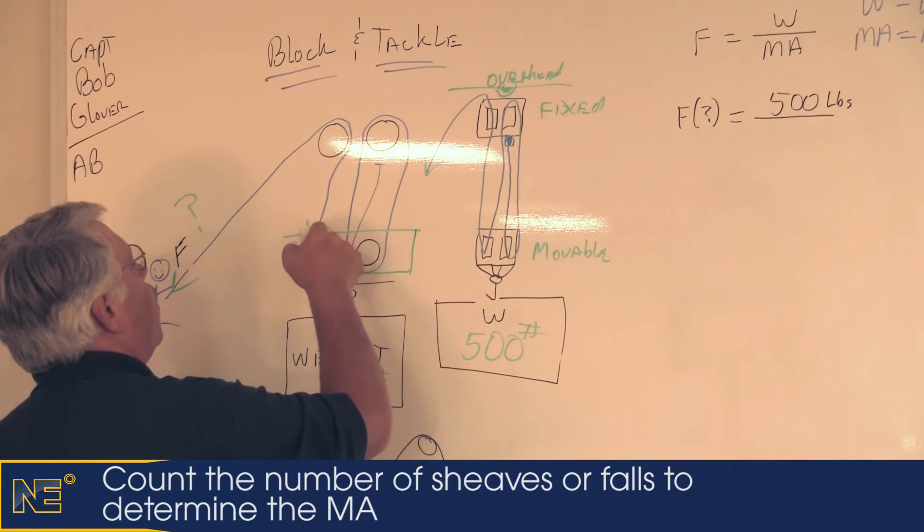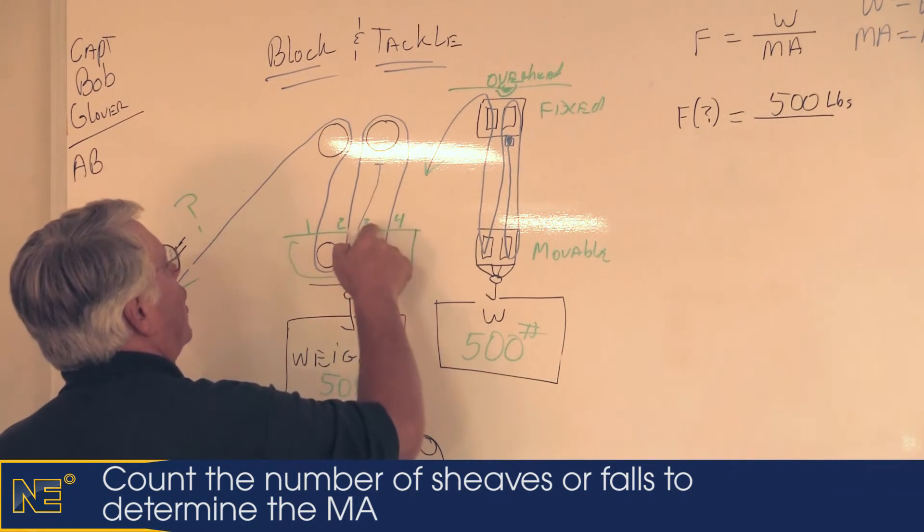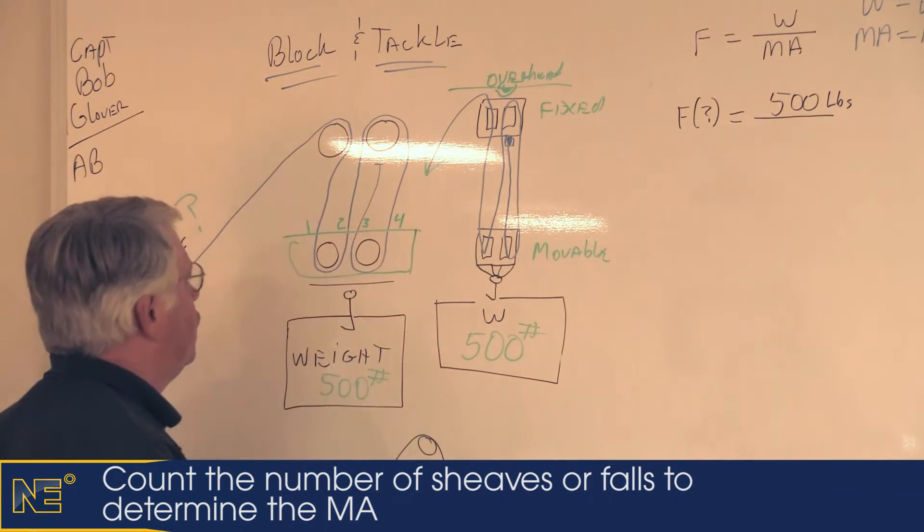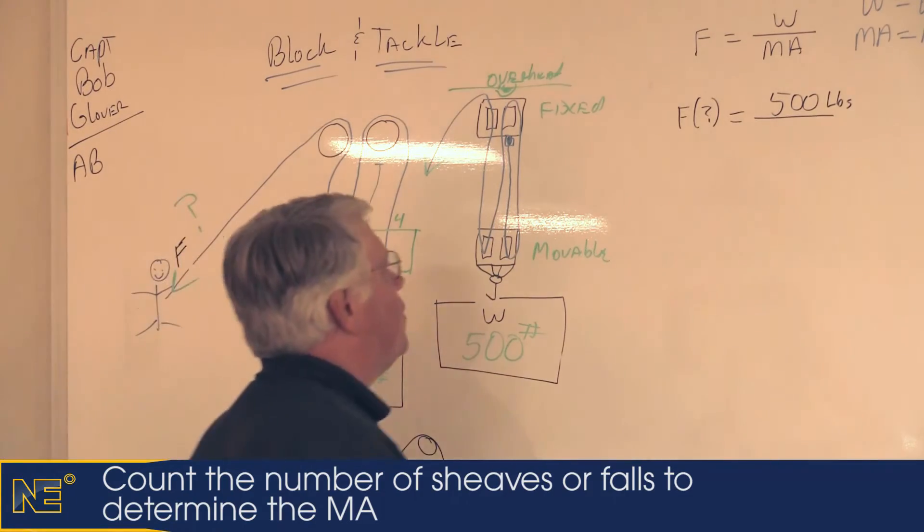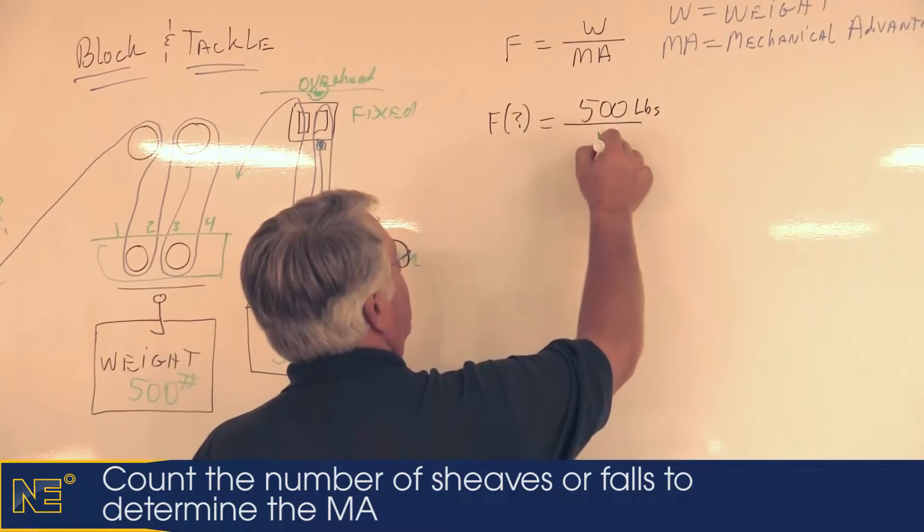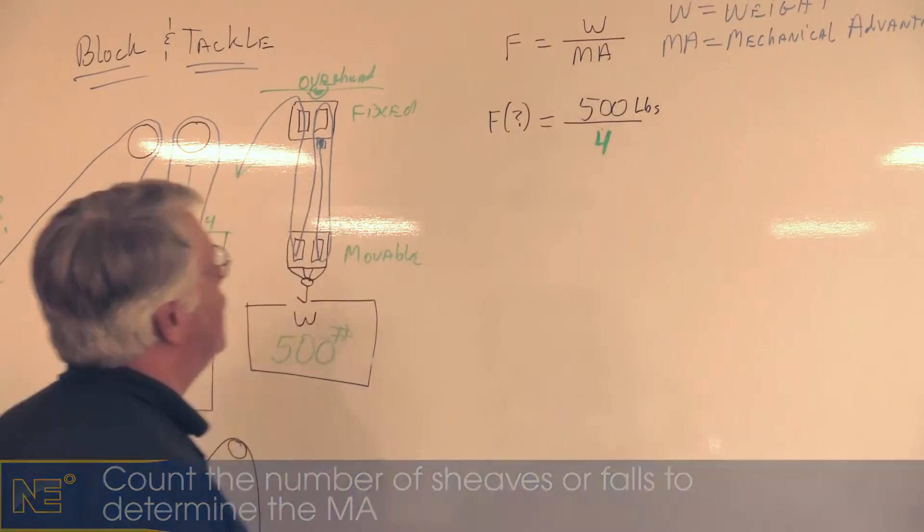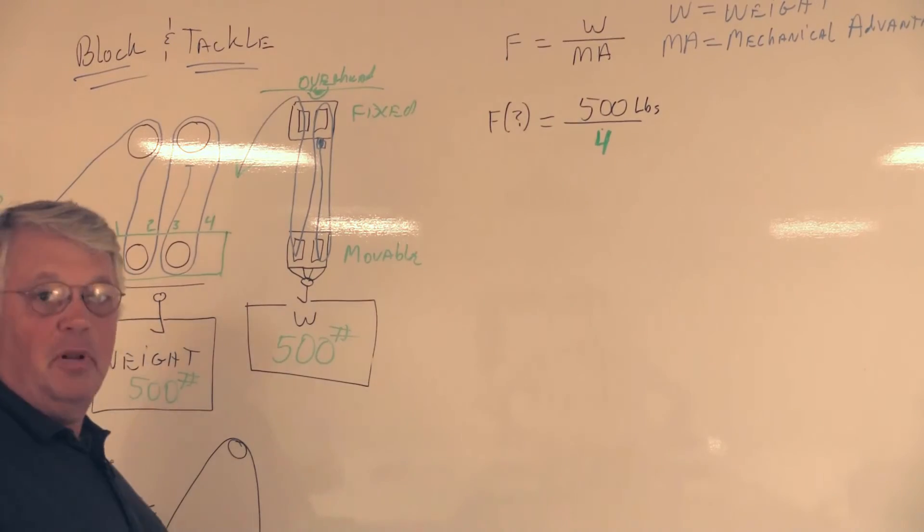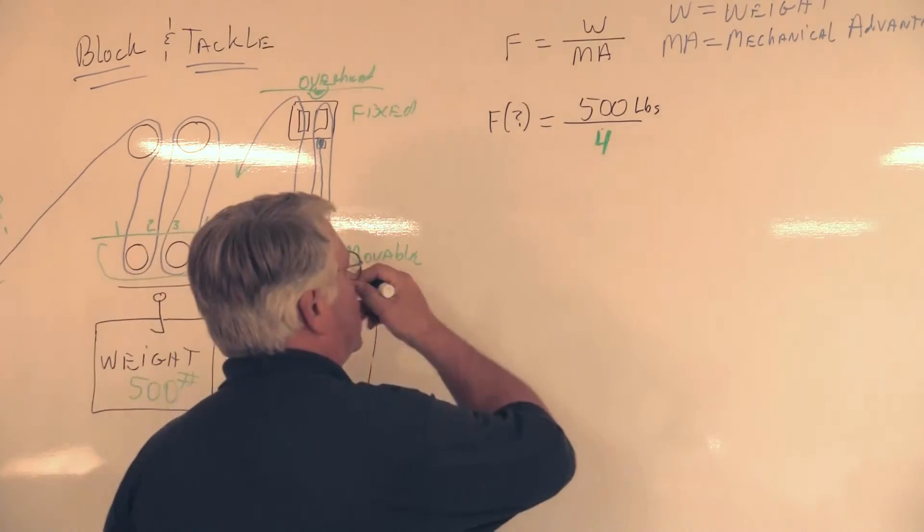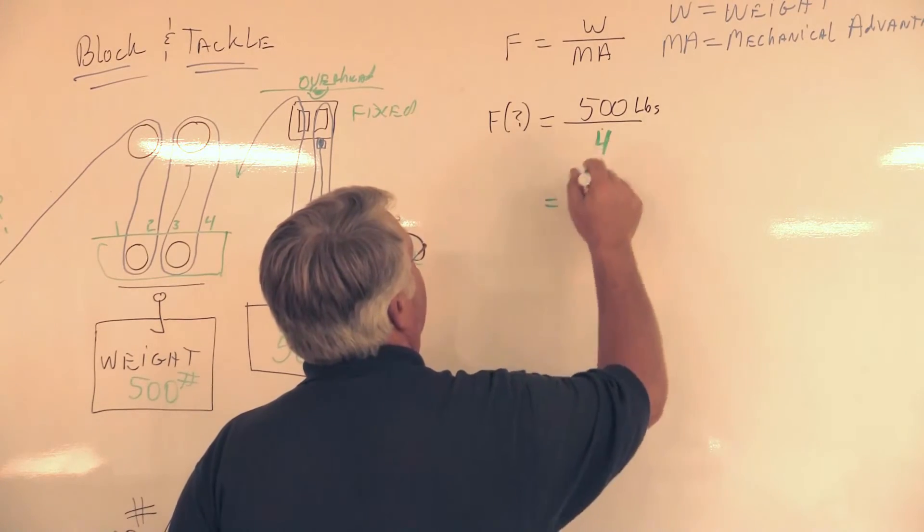Going back to our rule, we're going to figure out the mechanical advantage by counting how many lines are at the movable block. We have one, two, three, four parts of line at the movable block. So that's our mechanical advantage - it's four. Now we have the ability to do a basic, simple math formula: we're going to take 500 pounds and divide it by four.